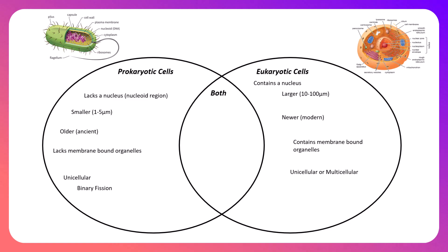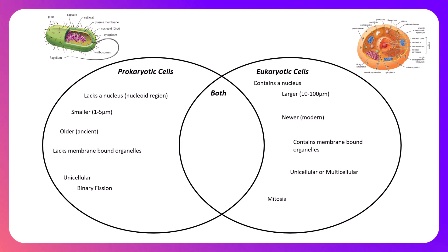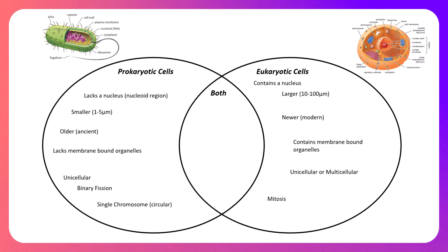Prokaryotic cells divide by binary fission, producing other prokaryotic cells. Eukaryotic cells employ mitosis for cell division. Recalling the cell theory, all cells come from existing cells — so no matter the cell type, there is always a form of cell division. Prokaryotic cells have a single circular chromosome, while eukaryotic cells contain multiple linear chromosomes.